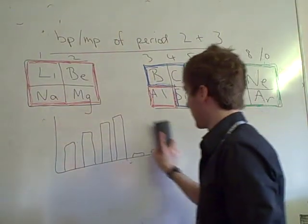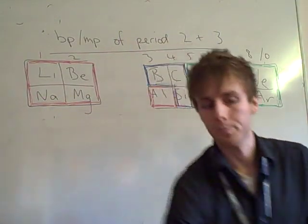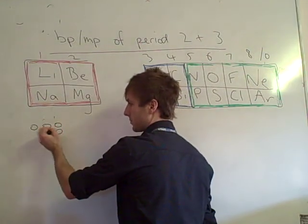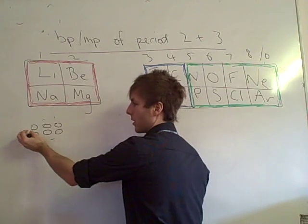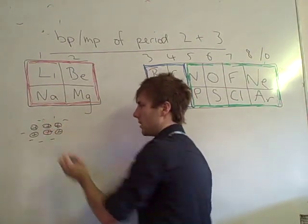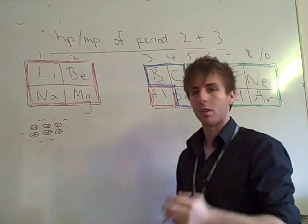And if I draw a diagram of that, that might help you remember it. So if I draw six sodium atoms, they're quite big, and they haven't got much charge. So that's high, because it's metallic, but not that high.